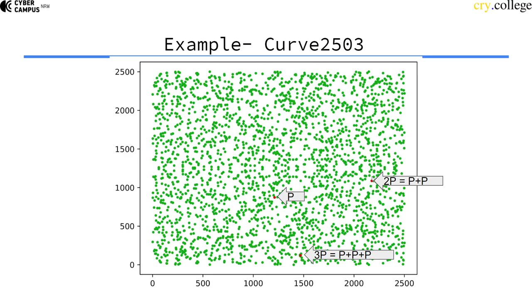If I do the scalar multiplication of 3, then P, P plus P, P plus P plus P, I end up down here. So this is the scalar multiplication of 3 times P.